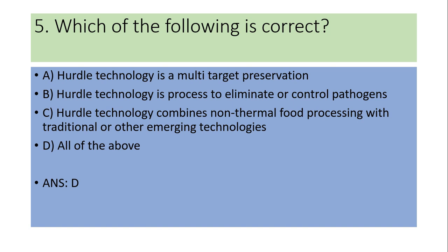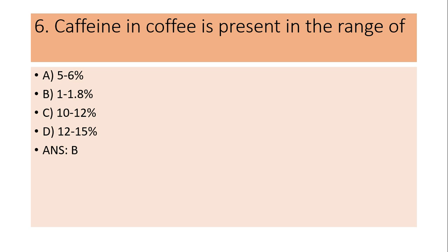Fifth question: Which of the following is correct regarding hurdle technology? Hurdle technology is a multi-target preservation; hurdle technology is processed to eliminate or control pathogens; hurdle technology combines non-thermal food processing with traditional or other emerging technologies; or all of the above. Answer is D: all of the above.